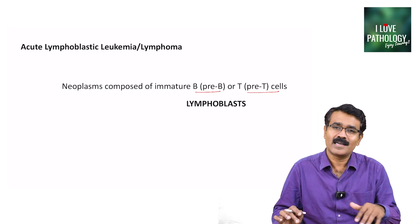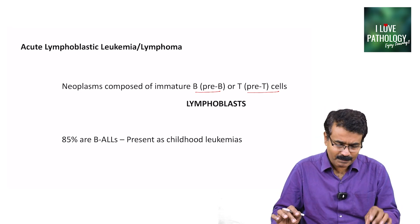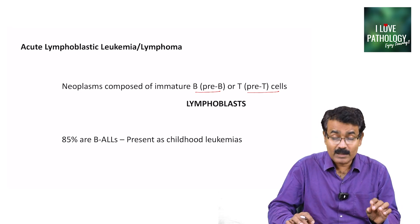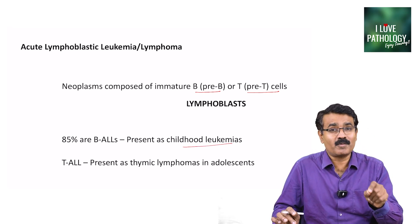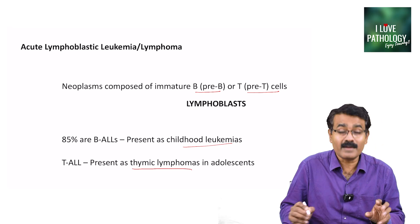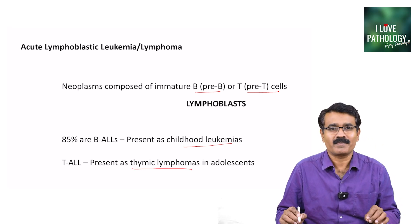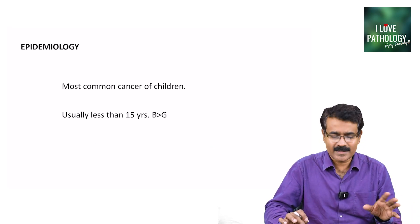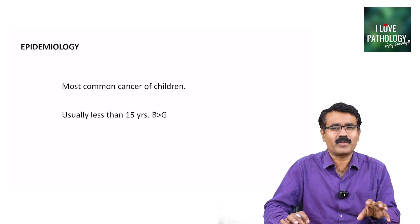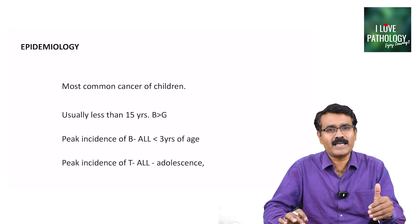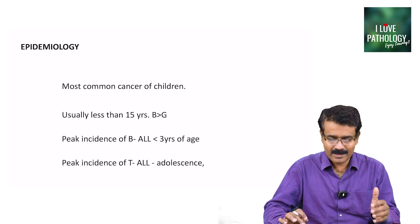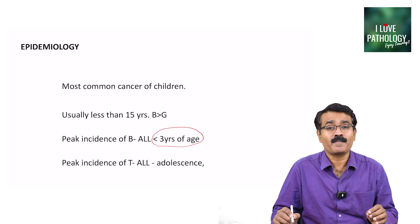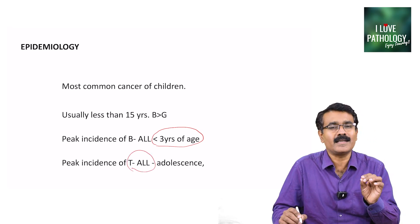They could be B lymphoblasts or T lymphoblasts. 85% of B-ALLs present as childhood leukemias, whereas T cell acute lymphoblastic lymphomas present as thymic lymphomas, usually in adolescence. If you see a lymphoid neoplasm in childhood, it's most often B-ALL. Epidemiology: most common cancer of children, usually less than 15 years, with boys more frequently affected than girls. Peak incidence of B cell ALL is around less than 3 years of age, while peak incidence of T-ALL is in adolescence.